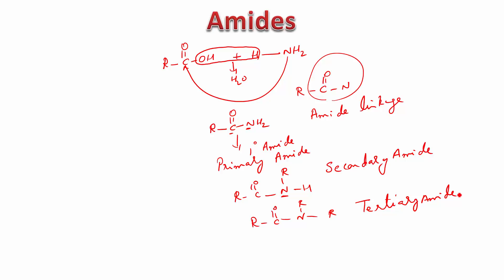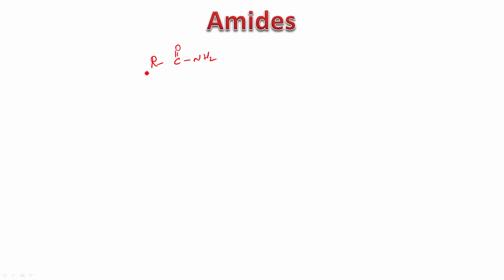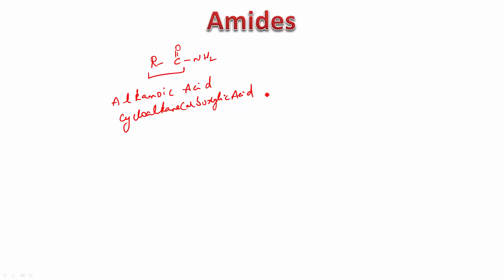Let's understand how we name a primary amide. When naming a primary amide, remember this part has come from the acid — so name that acid first. The acid could be alkanoic acid if it is acyclic, and if R is cyclic, then the acid would be cycloalkane carboxylic acid, for example cyclohexane carboxylic acid. If it is alkanoic acid, remove the 'oic acid' and put 'amide'. If it is cycloalkane carboxylic acid, remove the 'ic acid' and put 'amide'. The 'oic acid' goes to 'amide', and 'ic acid' goes to 'amide'.